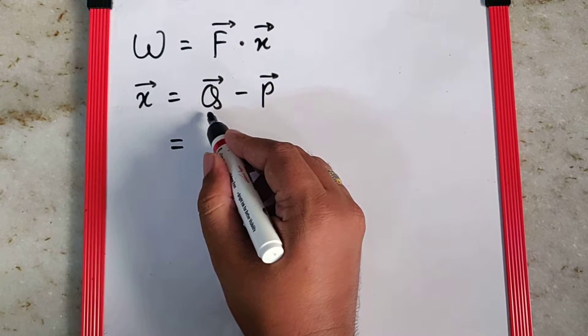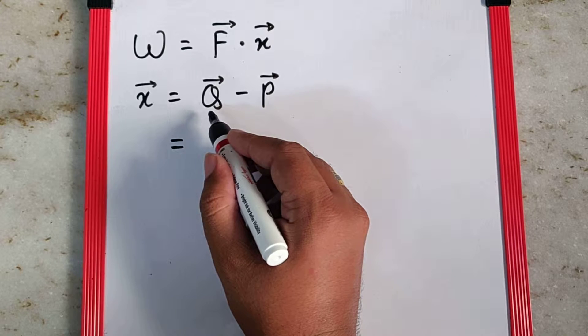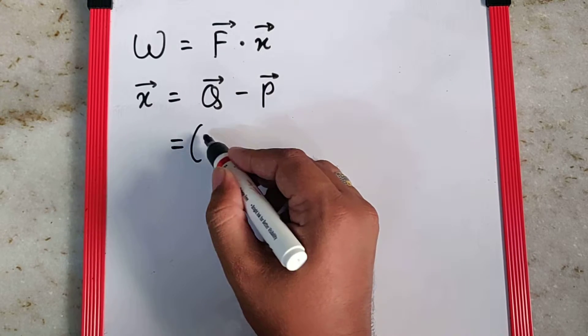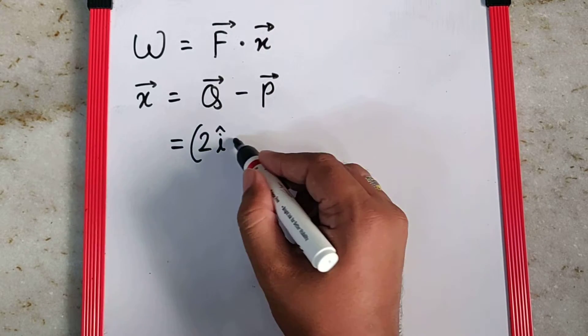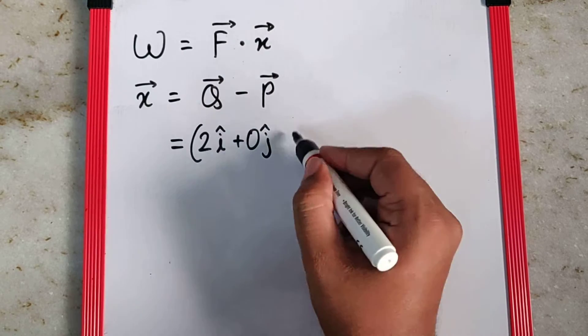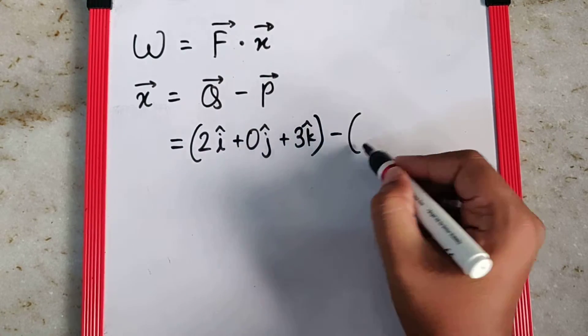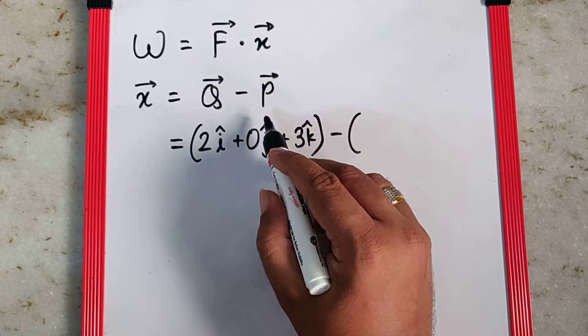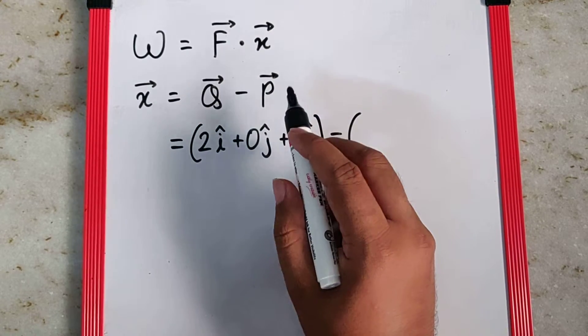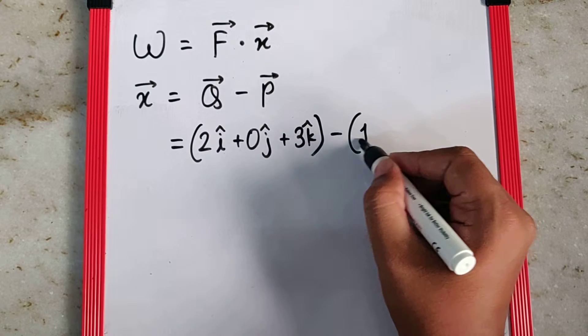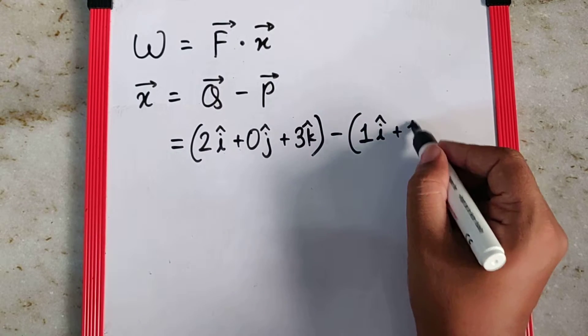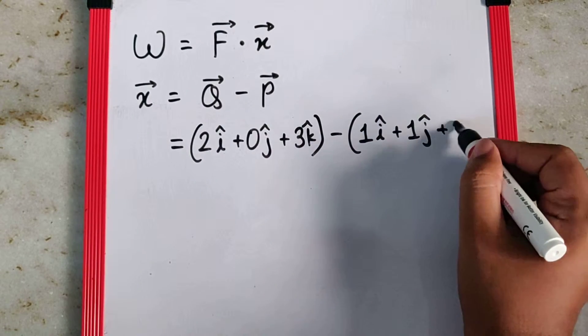The coordinate for Q is 2,0,3, for which the position vector is 2i cap plus 0j cap plus 3k cap. Minus the coordinates of P, which was 1,1,1, for which the position vector is 1i cap plus 1j cap plus 1k cap.